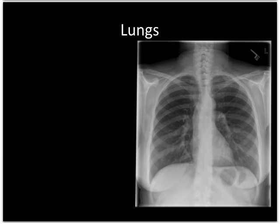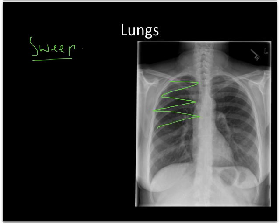Now we're going to get to the part where we're actually looking for abnormalities. I always start with the lung parenchyma. The way I search them is in a very systematic approach — I start by doing a sweep of both lungs. I use what I call the lawnmower approach: I cast my eyes back and forth. Remember, the lungs come behind the hemidiaphragms, so you want to keep going there — don't stop when you get to the diaphragms.